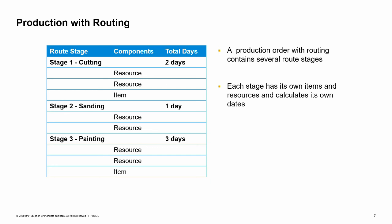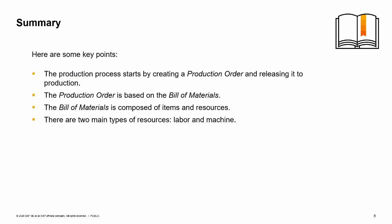To learn more about resource capacity management, refer to the course Resource Capacity. Here are some key points to take away from this session: The production process starts by creating a production order and releasing it to production. The production order is based on the bill of materials. The bill of materials is composed of items and resources. There are two main types of resources: labor and machine. You have completed the topic. Thank you for your time.